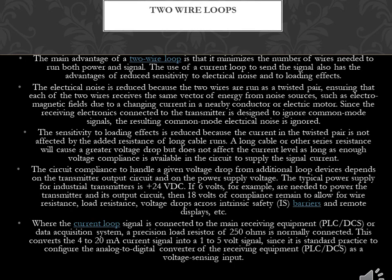Two-Wire Loops: the main advantage of a two-wire loop is that it minimizes the number of wires needed to run both power and signal. The use of a current loop to send the signal also has the advantages of reduced sensitivity to electrical noise and to loading effects. The electrical noise is reduced because the two wires are run as a twisted pair, ensuring that each wire receives the same vector of energy from noise sources such as electromagnetic interference due to a changing current in a nearby conductor or electric motor. Since the receiving electronics connected to the transmitter is designed to ignore common-mode signals, the resulting common-mode electrical noise is ignored.